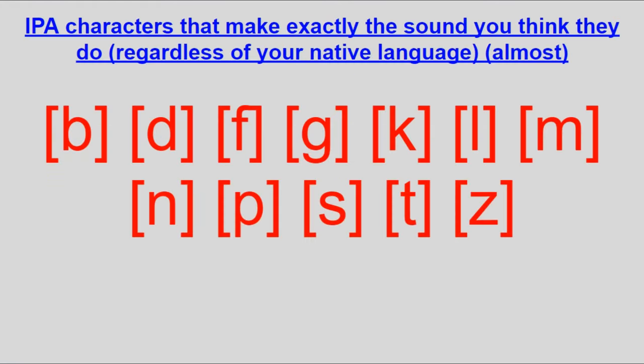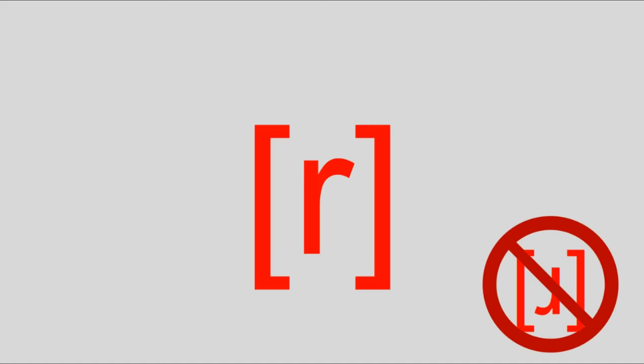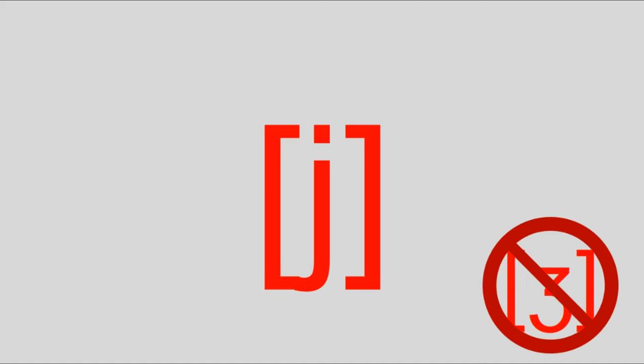A lot of the characters are instantly recognizable for what they are. However, some may deceive you depending on your first language, because the linguists creating the charts often chose based on popular demand for the letters' sounds. The two main examples are how one symbol isn't R but the IPA R based on how most of the world reads it, and how another isn't Z but Y because of its consistent usage for Y, especially in languages from Northern and Eastern Europe.